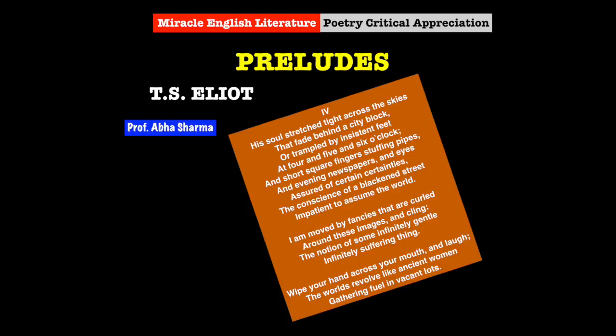The poet evaluates the mechanical modern life which has no pause. He begins with evening in the first stanza and in the fourth returns back to evening. Man being tired from evening to morning to evening, but still has fanciful happy images of life. He hopes to attain some eternal joy, whereas the reality is in contrast — he has to suffer eternally, infinitely.